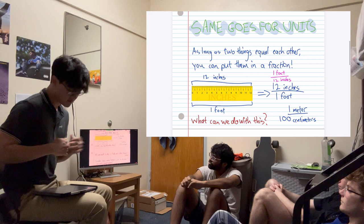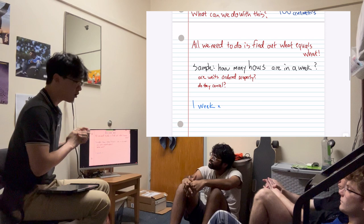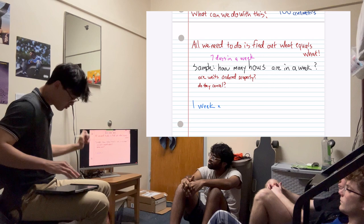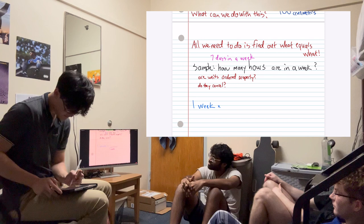So that means when converting between units, the only tricky thing to do is to find out what equals what. So for example, Shriath, how many days are in a week? Seven. Seven. Good. But that feeds into our sample. How many hours are in a week? We'll start off with Shriath's one week equals... You said seven days? Seven days.